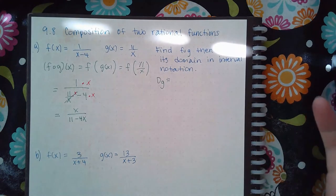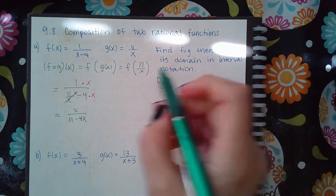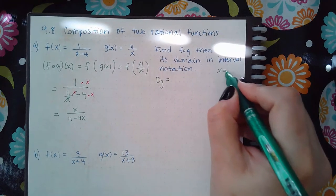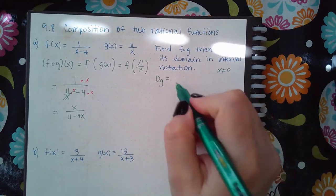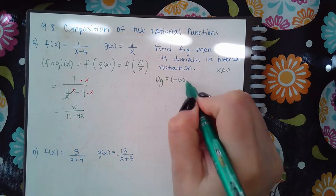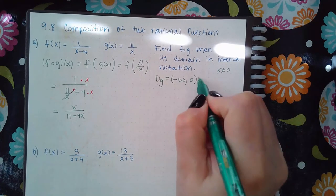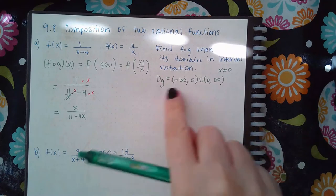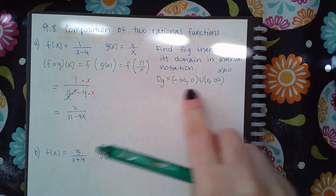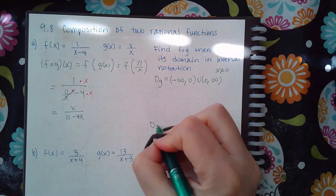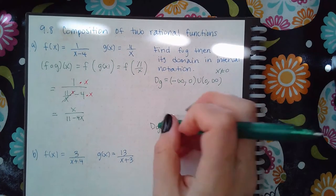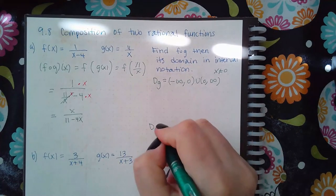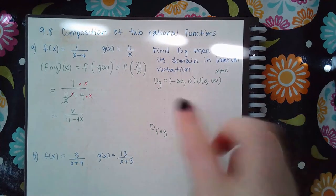The inside function was g, so we need to find the domain of g to figure out what the potential domain is. Since g is a fraction, that denominator cannot equal 0, so the interval is going to be from negative infinity to 0 and then from 0 to positive infinity.